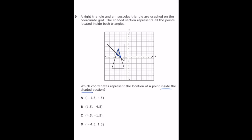Letter A is negative 1.5 and 4.5, which means we're going to go left 1.5 and up to 4.5. As you can see, that is not inside the shaded area. Letter B is 1.5 and negative 4.5. So we're going to go to the right 1.5 and then down to 4.5. Obviously it's nowhere close. Letter C is 4.5 and negative 1.5. So that's 4.5 to the right, down 1.5. Again, that's nowhere close.